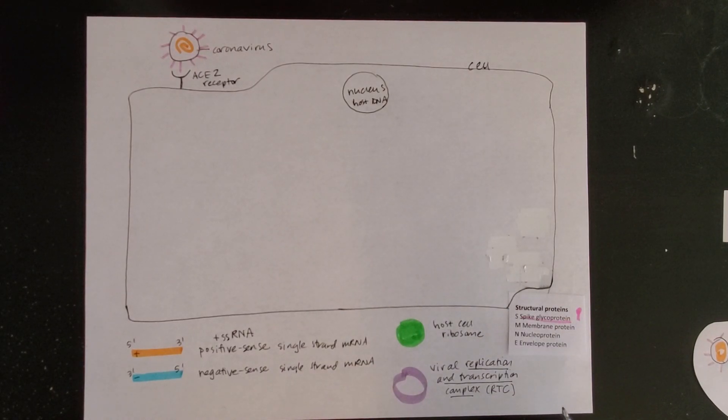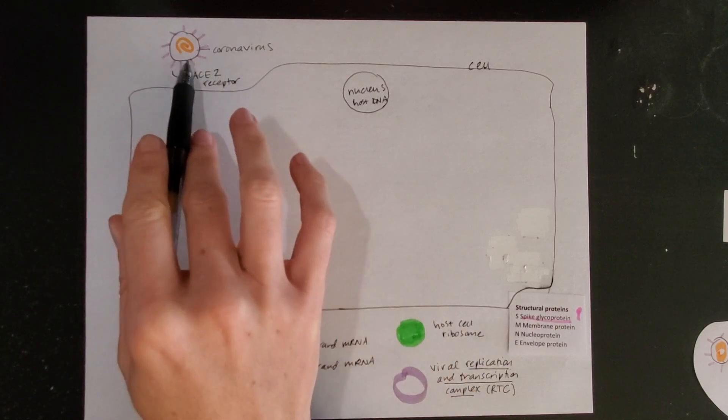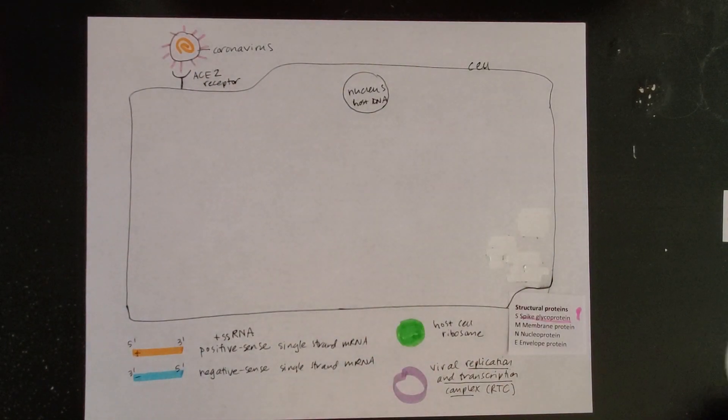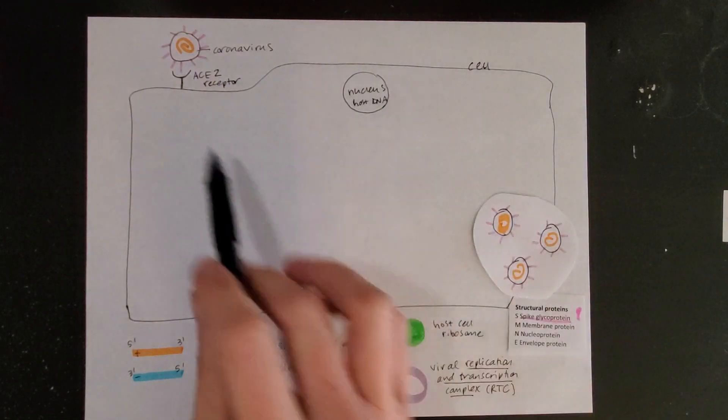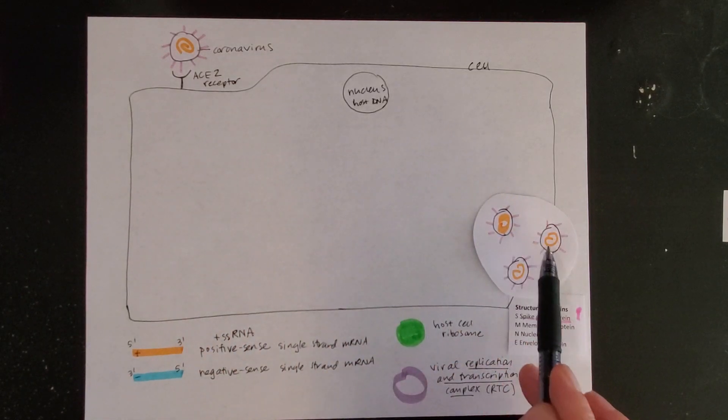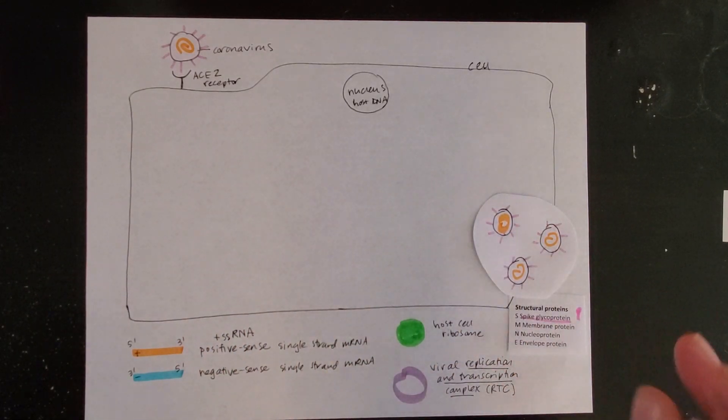We're going to take a look at a simplified diagram of the coronavirus and its life cycle as it works its way through the cell to make more viruses to send out into the host.